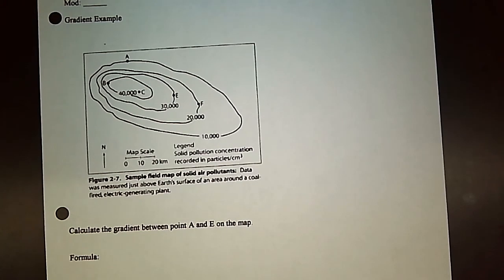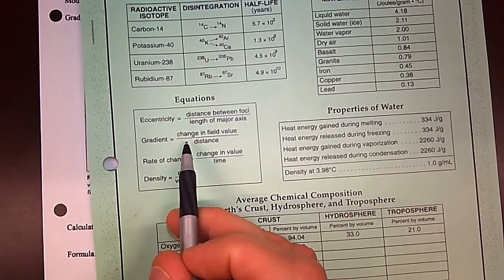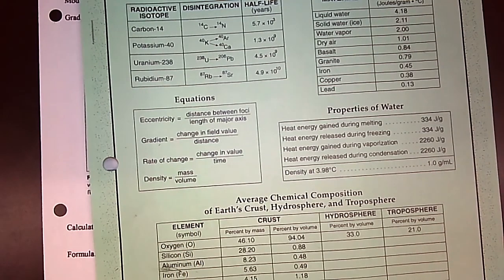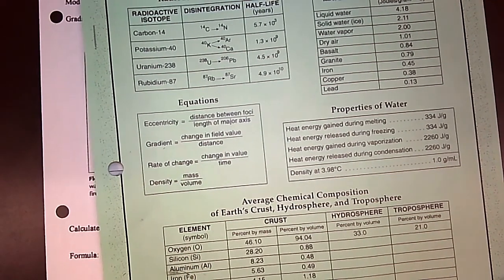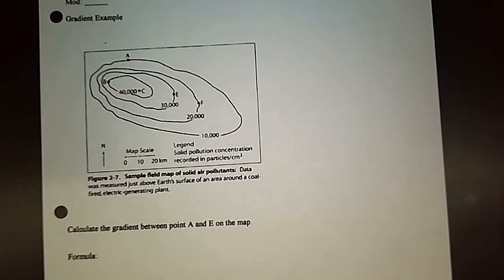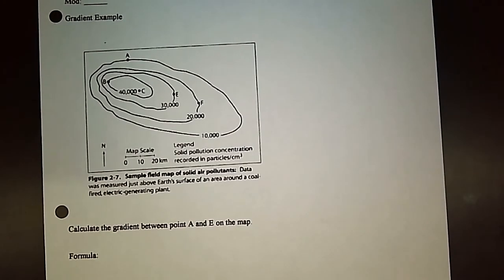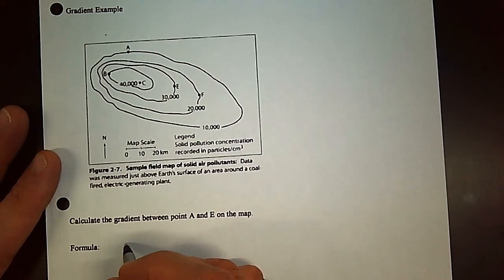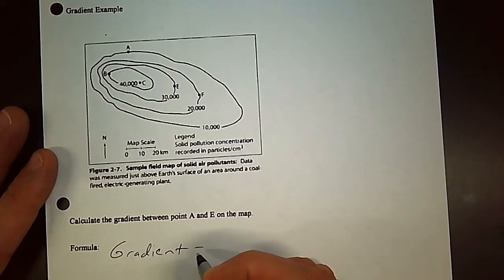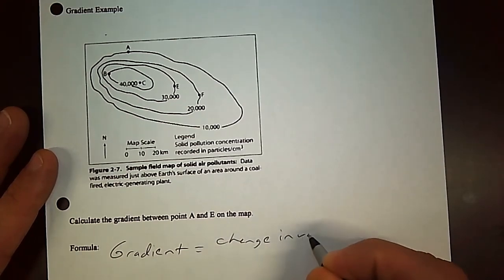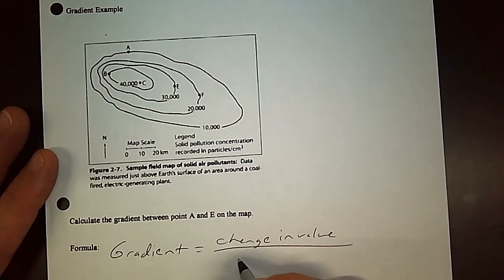Gradient is found on the front of the reference table, the formula, and it actually is right here. So gradient equals change in field value divided by distance. You don't have to memorize it, but you have to know how to use the formula. So I'm going to copy that formula here. I would always write your formulas down before you use them. Gradient equals change in value divided by distance.